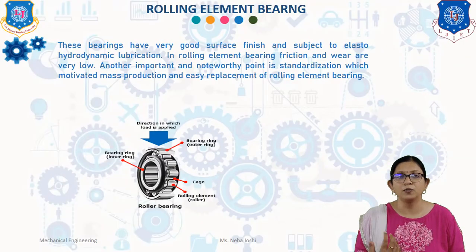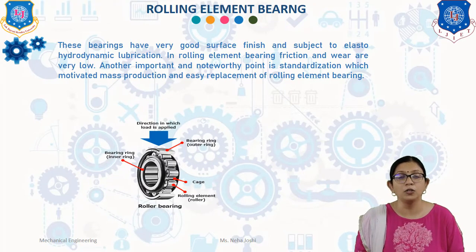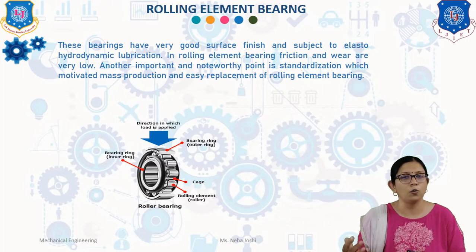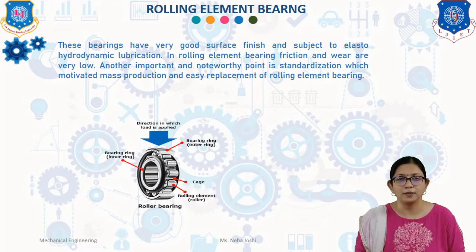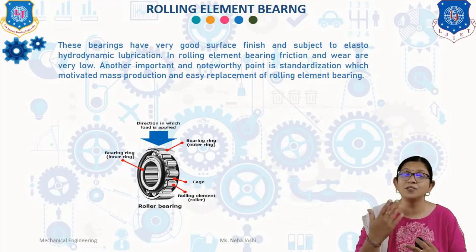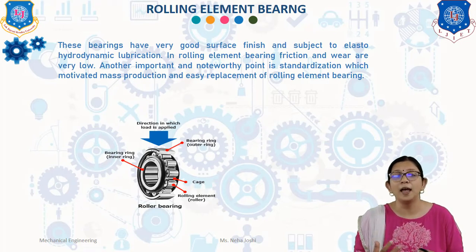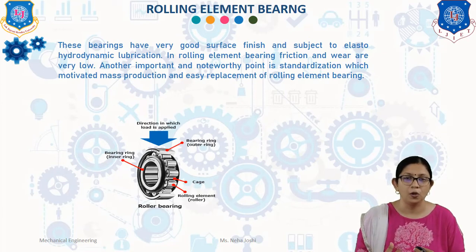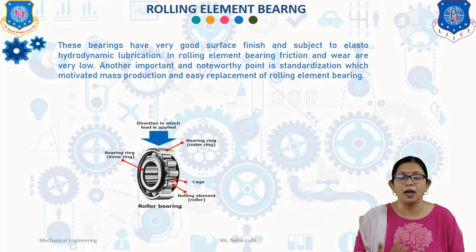First of all we will discuss what is rolling element bearing. A rolling element bearing, also known as a rolling bearing, is a bearing which carries a load by placing rolling elements like balls or rollers between two bearing rings called races. The relative motion of the races causes the rolling elements to roll with very little rolling resistance and with little sliding. Every rotating machine has some rolling element, as rotation is always easier than linear motion. These bearings have very good surface finish and are subject to elastohydrodynamic lubrication. In rolling element bearing, bearing friction and wear are very low.